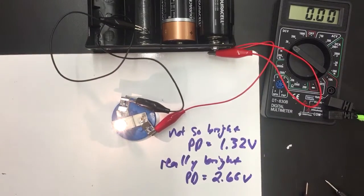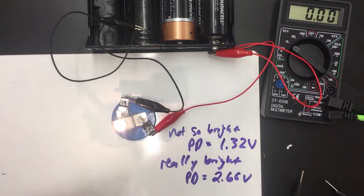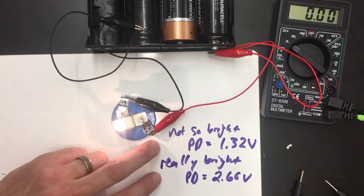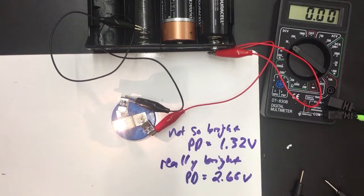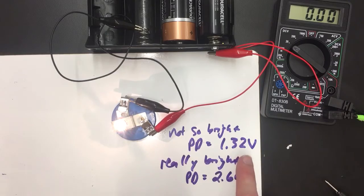And remember, the claim that we're talking about is more brightness means more pressure difference, or less brightness means less pressure difference. These two measurements together show us that a really bright bulb has a greater pressure difference across it, and a not so bright bulb has a less pressure difference across it.